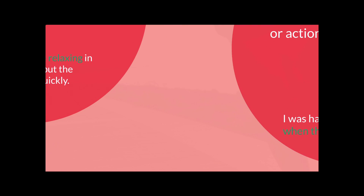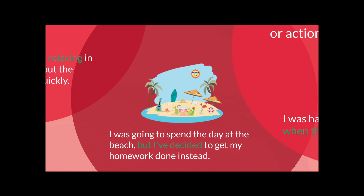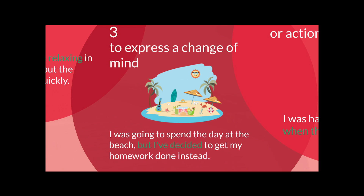Condition 3. The example is: I was going to spend the day at the beach, but I have decided to get my homework done instead. From this example, we could easily see that we can use Past Continuous Tense to express a change of mind.